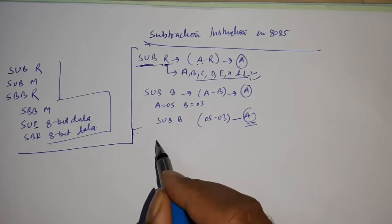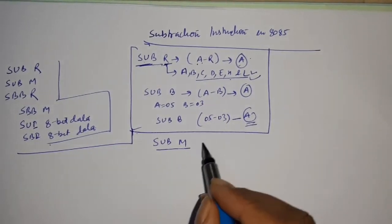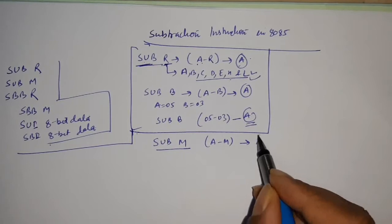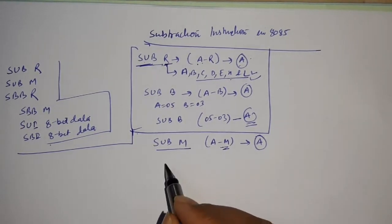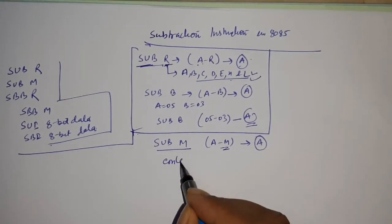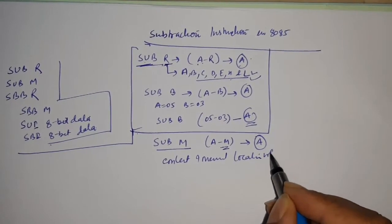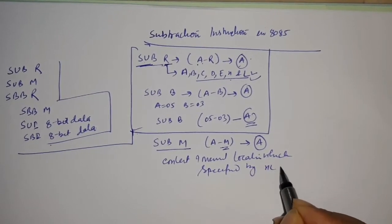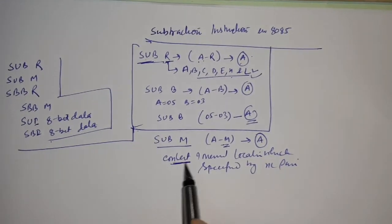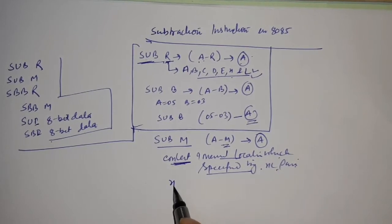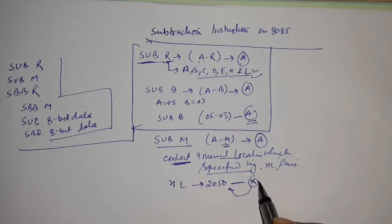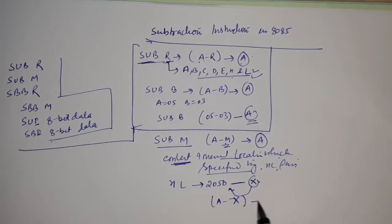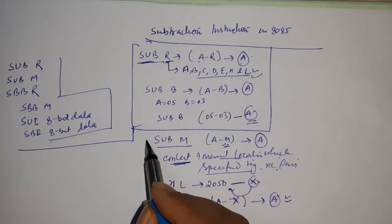Now moving forward to our next instruction: SUB M. SUB M means A minus M, and the output will be stored in the accumulator. M is a memory content — the content of a memory location which is specified by the HL pair. Suppose the HL pair contains memory location 2050 and a data X is stored at this location. The meaning of M will be X, so that will be A minus X and the output will be stored in the accumulator.